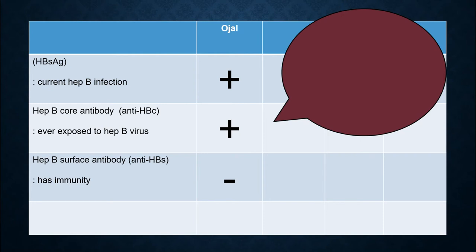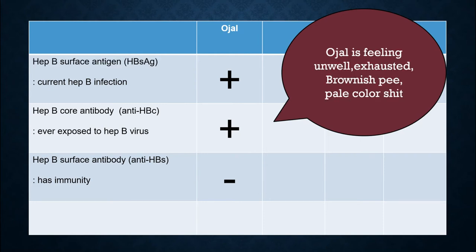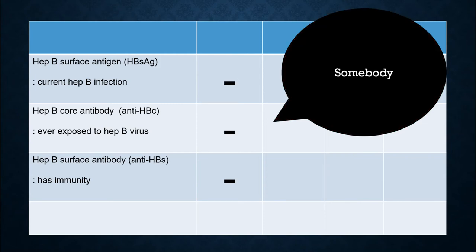For this case, the person is feeling unwell, exhausted, has brownish urine, and pale-colored stool. When someone has results like this, it means the person has no immunity and has never been infected by hepatitis B. So, we need to proceed with vaccination in a case like this.